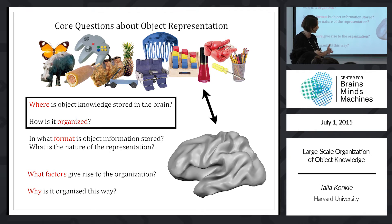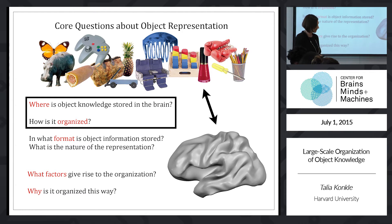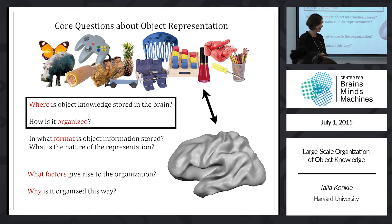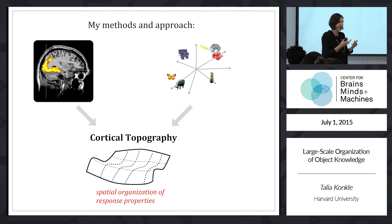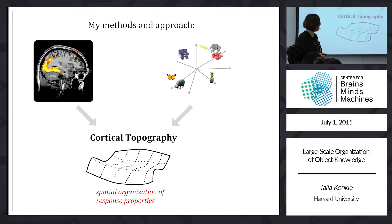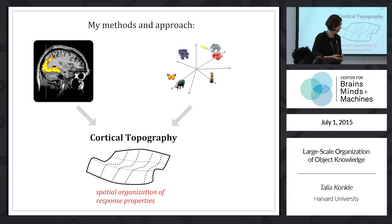And then also developmental questions: what factors give rise to this organization through experience? What's built in? And why is it organized the way it is? Those are major core questions that the field of visual cognitive neuroscience is working on right now. I'm going to focus mostly on the question of organization. Broadly, my methods: I do human neuroimaging — put people in the scanner — and a lot of computational modeling, behavioral studies, or computer vision models to understand different features and properties of objects. I try to take neural measurements and behavioral measurements and understand how they're linked, in particular by looking at how information is organized across the cortical surface — the spatial organization of different response properties.